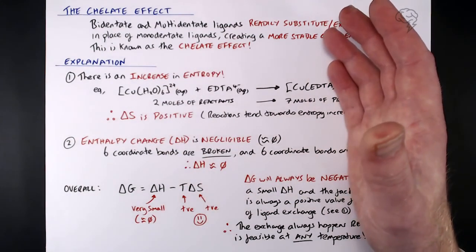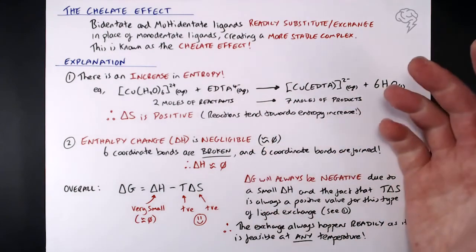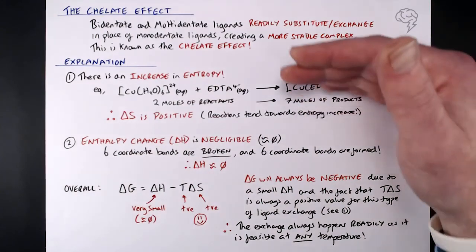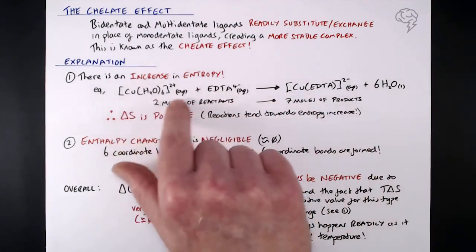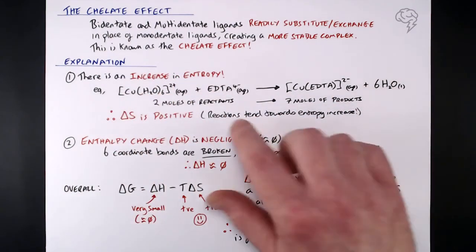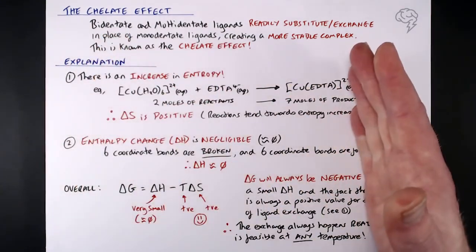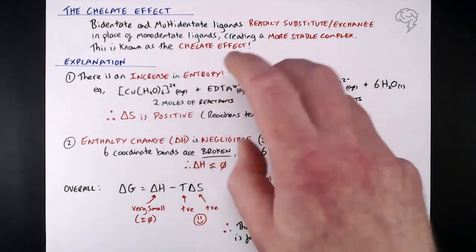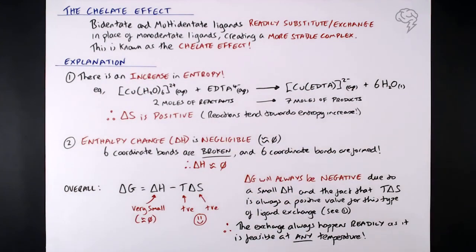Overall then, what do we need to understand with the chelate effect? Well, there's a number of different questions they can ask. They can ask you maybe what two things do we need to consider when explaining the chelate effect? Well, that's entropy change and enthalpy change. Or they may ask you for six marks, the whole hog, explain why this reaction happens readily when EDTA displaces or substitutes in for these water molecules. Hell, it could be even EDTA for three bidentate ligands. So we always tend towards entropy and we always get an increase in entropy when exchanging multidentate for bidentate or mono and bidentate for mono because we're increasing entropy and enthalpy change is negligible. So that is your chelate effect in a nutshell.